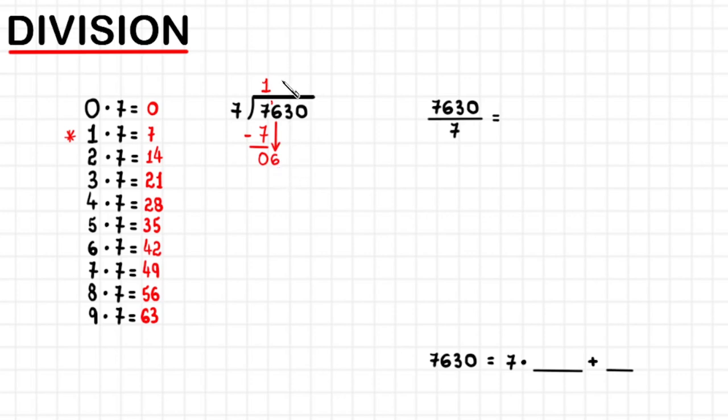What number from 0 to 9 do I multiply by 7 to get almost 6, but not more than 6? You will see that 1 times 7 is already too much. So the number we were looking for is 0. I write 0 here. 0 times 7 is 0. I put 0 here. And then we do another subtraction that is pretty easy, because 6 minus 0 is still 6.